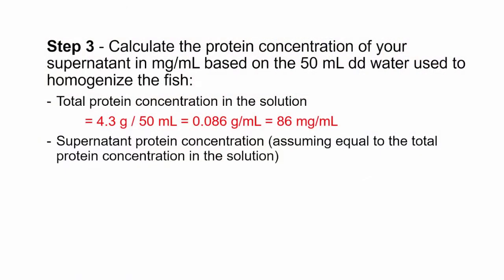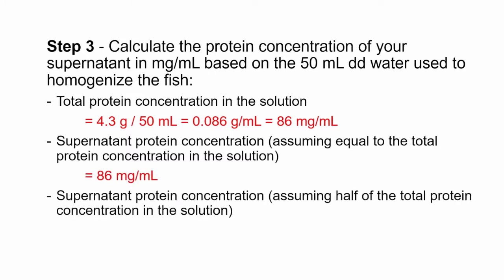Here, we will demonstrate two sample dilution calculations: one assuming the protein concentration of the supernatant is the same as the total protein concentration of the fish solution, while the other assumes the protein concentration of the supernatant is only half of the total protein concentration. These assumptions are just used as an example in this video.